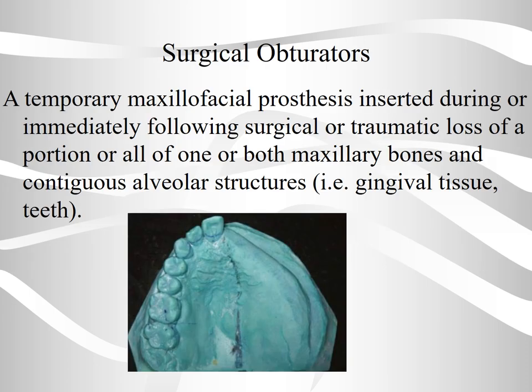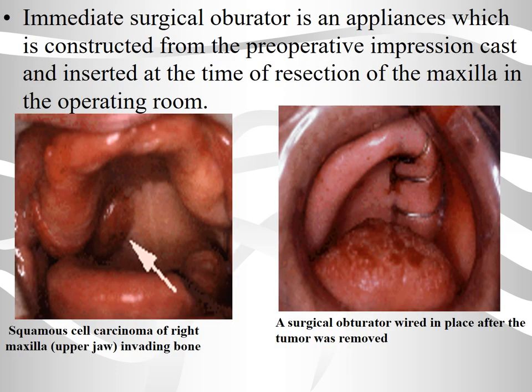Coming to the surgical obturators, it is a temporary maxillofacial prosthesis inserted during or immediately following surgical or traumatic loss of a portion or all of one or both maxillary bones and contiguous alveolar structures, as you can see in the picture below. The immediate surgical obturator is an appliance constructed from the preoperative impression cast and inserted at the time of resection of the maxilla in the operating room. In the left photo, you can see squamous cell carcinoma on the right maxillary bone.